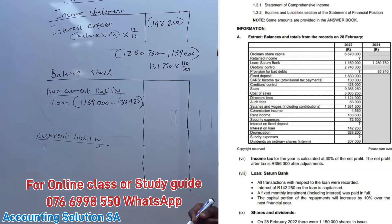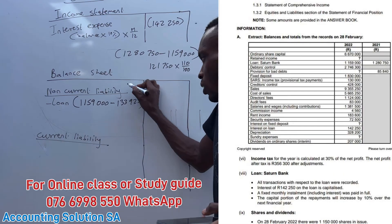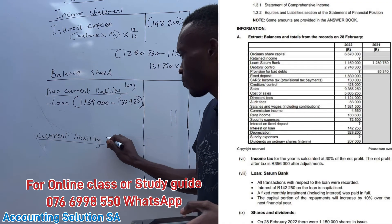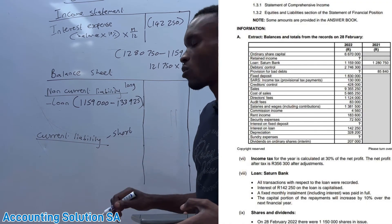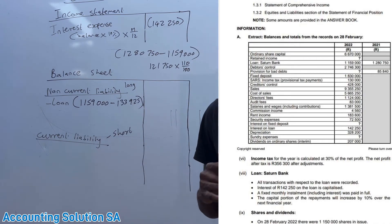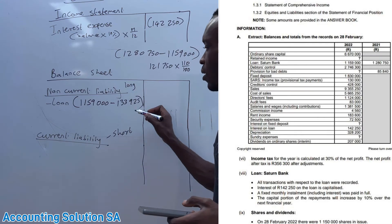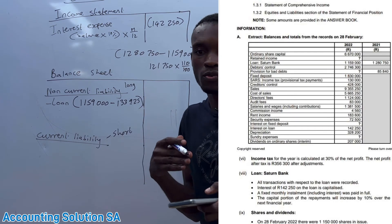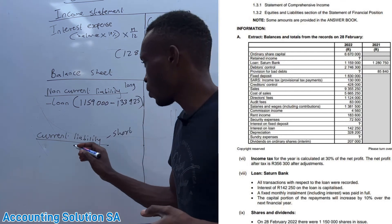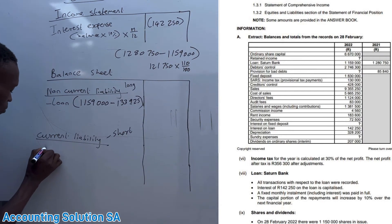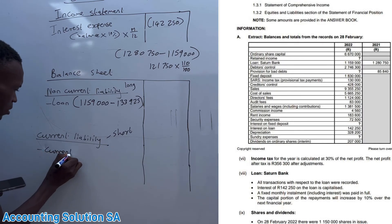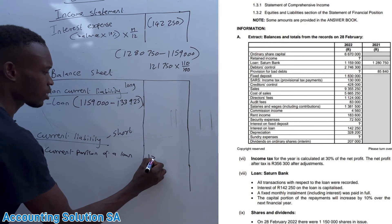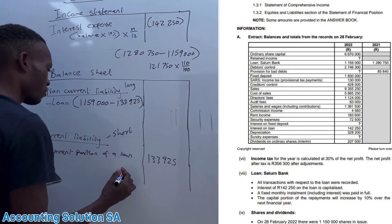Why are we subtracting it here and recording it separately? Because non-current liabilities are long-term — long-term simply means it's going to last for more than 12 months. The current portion is short-term; it's going to last less than 12 months. This amount is going to be paid next year, which means it's now short-term. That's why we transfer it from non-current liabilities to current liabilities.